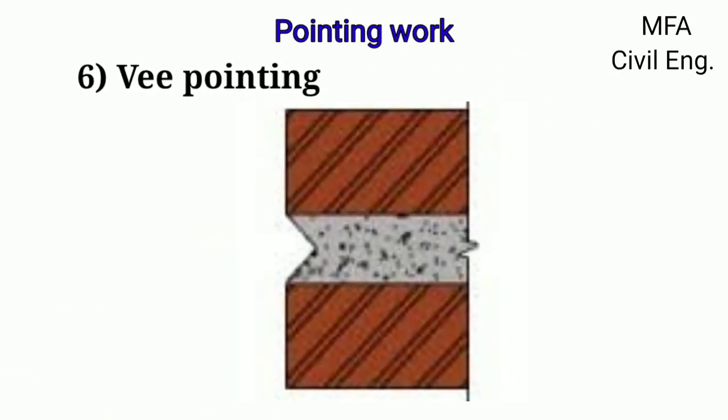In V type of pointing, either V-shaped grooves are engraved in the finished surface of the pointing plaster when it is still wet, or by projecting a V shape of the pointing face outside the wall surface.